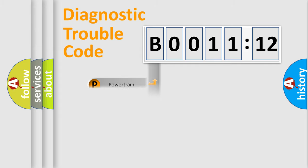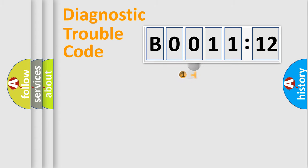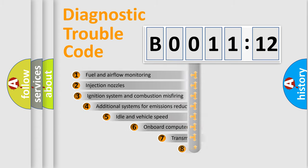Powertrain, Body, Chassis, Network. This distribution is defined in the first character code. If the second character is expressed as zero, it is a standardized error. In the case of numbers 1, 2, 3, it is a manufacturer-specific expression of the car-specific error.